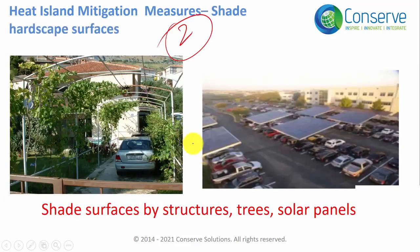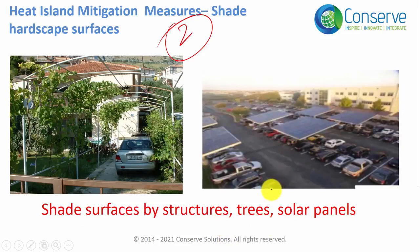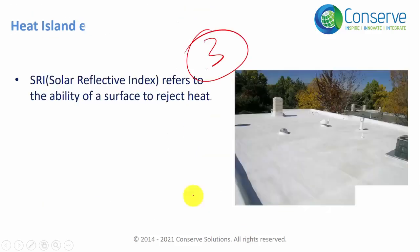Hardscape surfaces can also be shaded by structures, trees, or solar panels. When shading by structures, ensure the roof of the structure is also addressed for heat island effect mitigation.